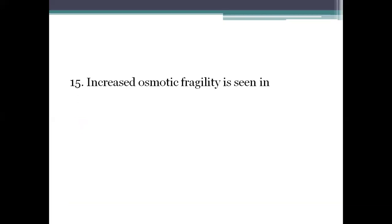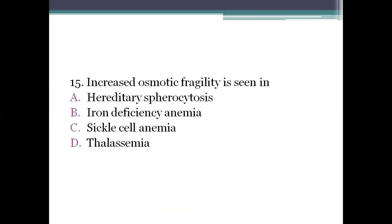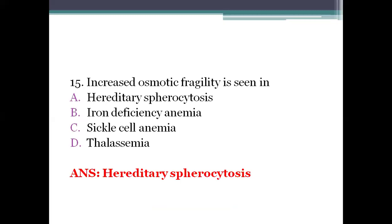Next question: increased osmotic fragility is seen in? Option A: hereditary spherocytosis. Option B: iron deficiency anemia. Option C: sickle cell anemia. Option D: thalassemia. The right answer is option A, hereditary spherocytosis. This is an inherited blood disorder caused by a problem with the RBCs, making them more fragile — they have a tendency to break easily.